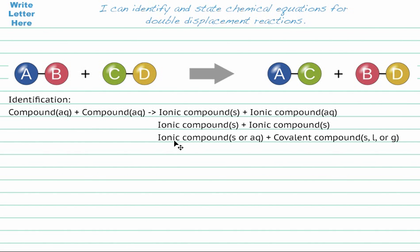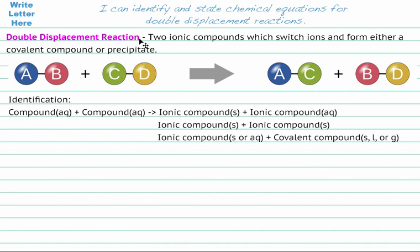Another option is that we end up with an ionic compound that is either a solid precipitate or soluble in water, and the other compound must be a covalent compound. These are the three options for what we're looking for in the products. To give an overall definition: a double displacement reaction is when we take two ionic compounds which switch ions to form either a covalent compound or a precipitate, shown by the solids.